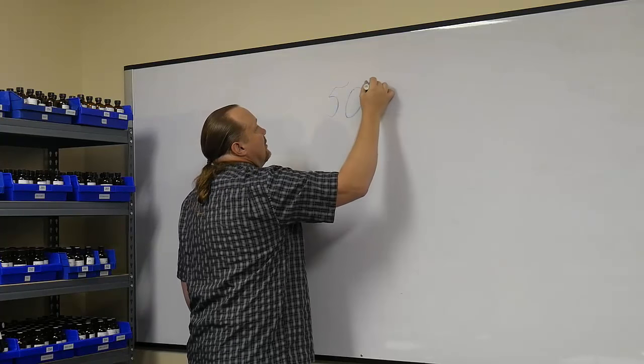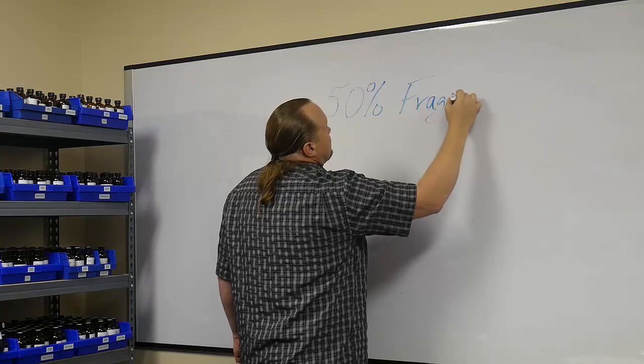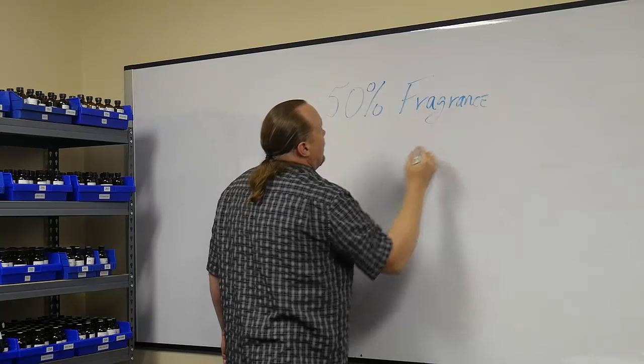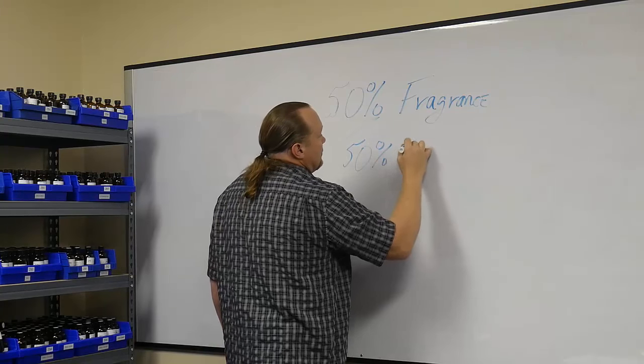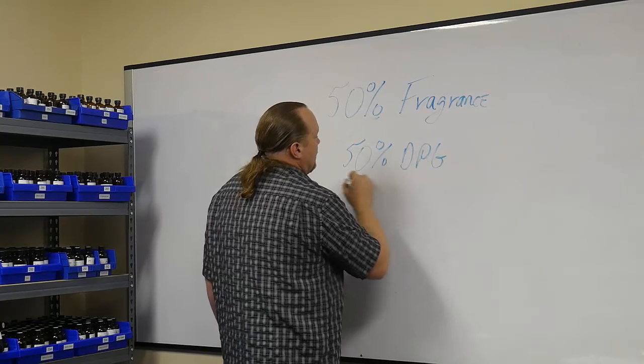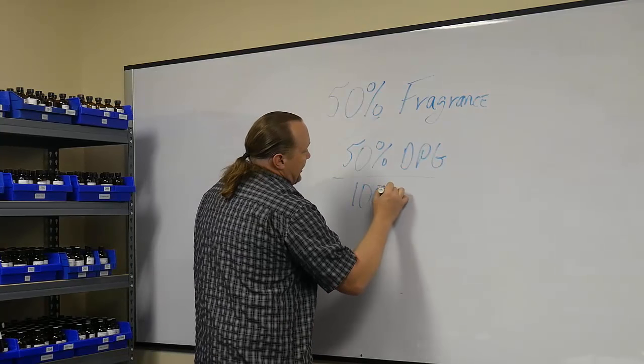The basic formula is 50% fragrance, 50% DPG. This equals the 100% mix that equals incense.